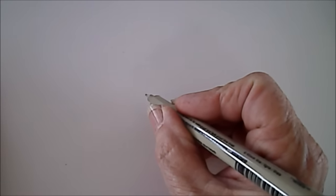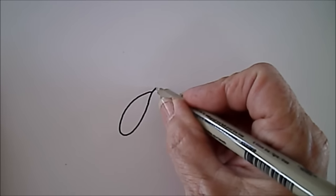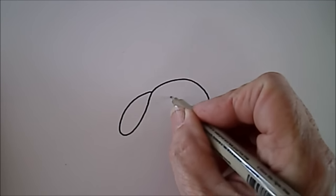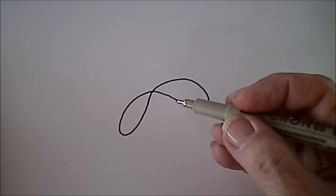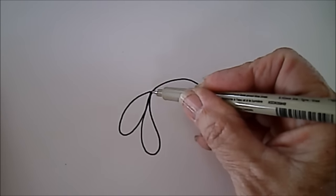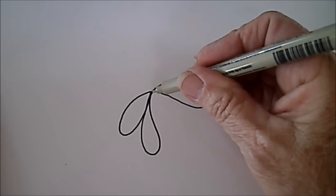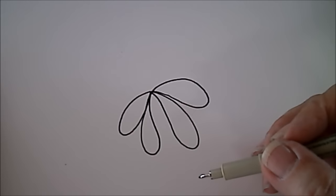We start with a kind of droopy little figure eight, because these are going to produce the petals. Then we're going to make another petal down here and another petal there.